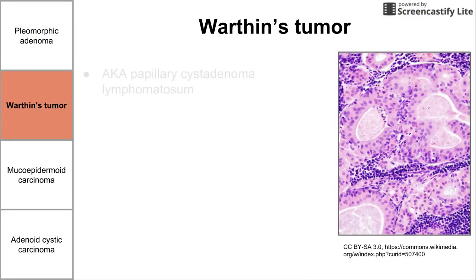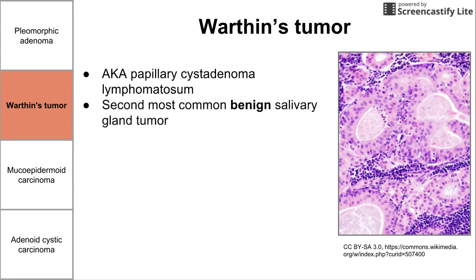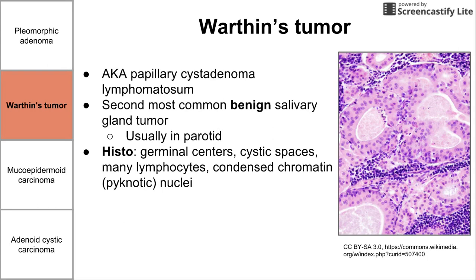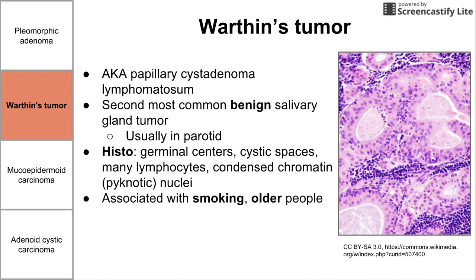It's important to resect it every time because it can become cancer. Next is Warthin's tumor — the actual name is shown there. This is the second most common benign salivary gland tumor, also usually found in the parotid gland. On histology, you see germinal centers, cystic spaces, many lymphocytes, and nuclei with condensed chromatin, called pyknotic nuclei. This disease is associated with smoking and is usually found in older people. The tumor is slow-growing and often painless.